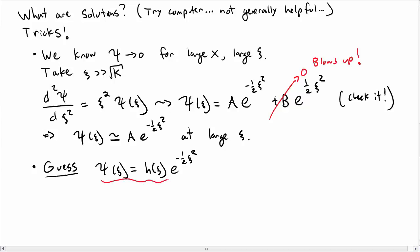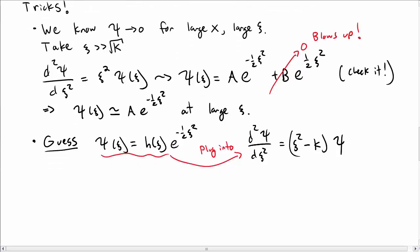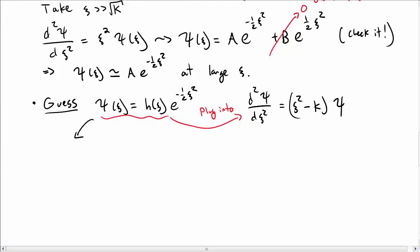So we're going to plug that into our Schrödinger's equation that we rewrote—this version of the Schrödinger's equation. It's going to give us an equation for H. Hopefully it'll be easier to solve than the equation we have for ψ. That's the game.